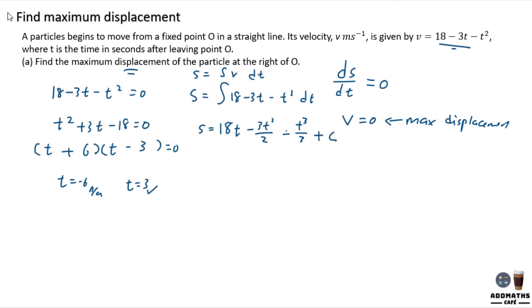You are required to find this c. How to find c? The particle begins to move from a fixed point, so when t = 0, c = 0. Therefore, S = 18t - 3t²/2 - t³/3. This is your displacement starting from zero.